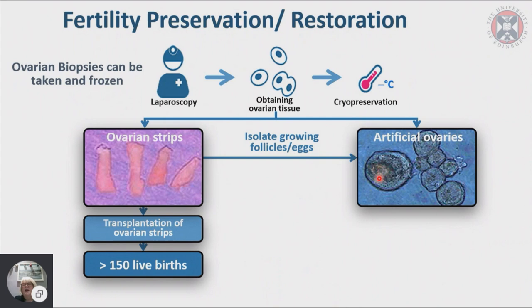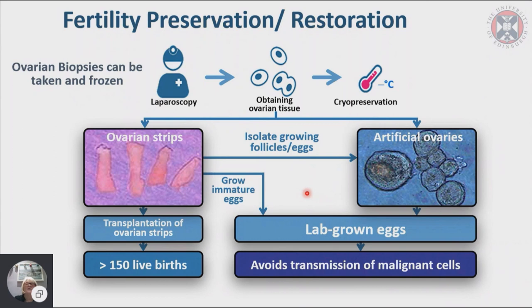There's a problem sometimes with transplanting the tissue: although fertility might be preserved through cryopreservation, in some cases the tissue cannot be transplanted because it could risk reintroducing malignant cells. The group of Jacques Doné, Marie-Madeleine Dolmans, and Christiane Amarini have been looking at developing artificial ovaries, where they isolate follicles of all stages, remove any potential malignant cells, and embed them within a matrix to be transplanted back. This has led to developing the ability to grow immature eggs from these strips entirely in the lab, avoiding the transmission of any malignant cells.